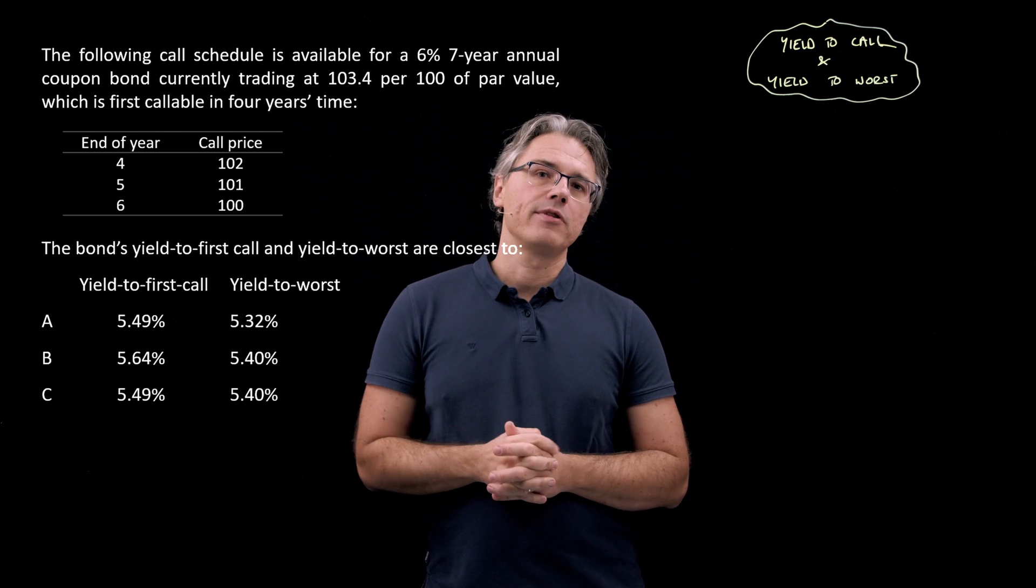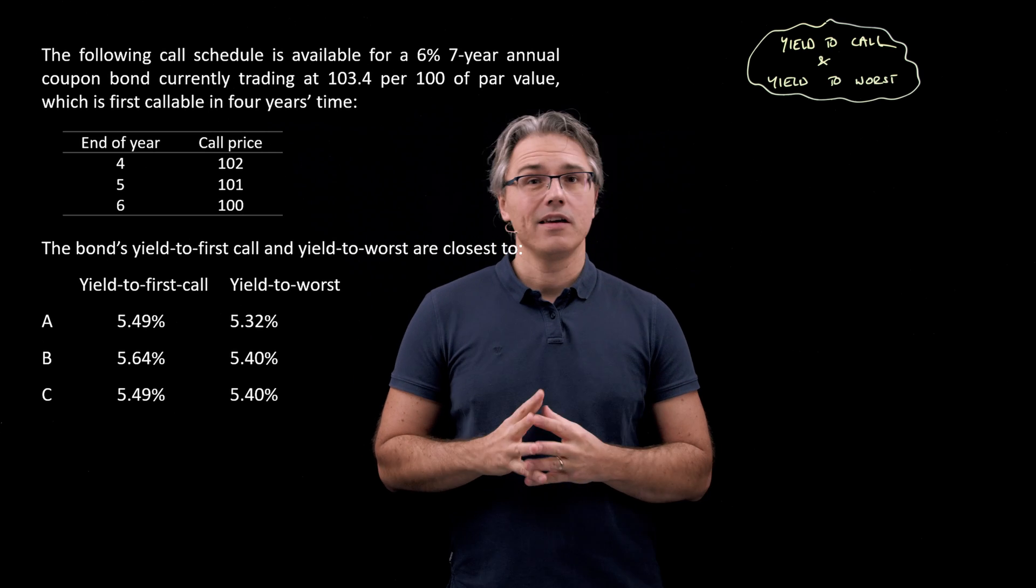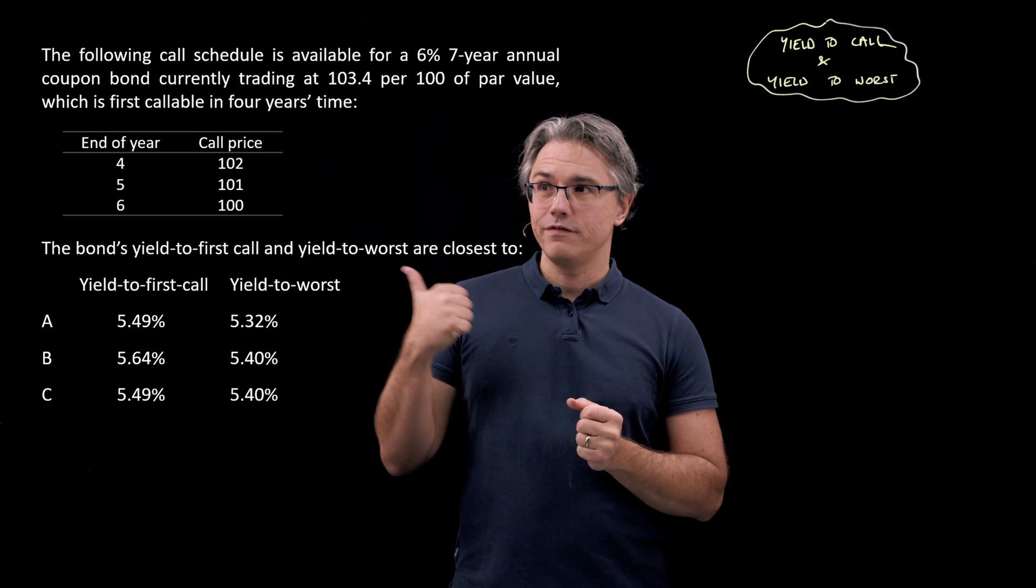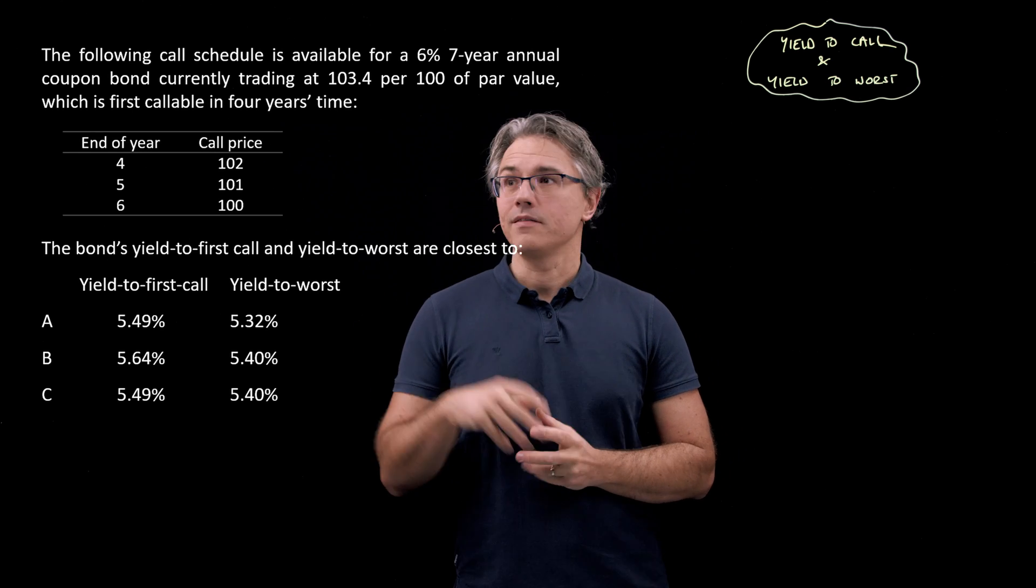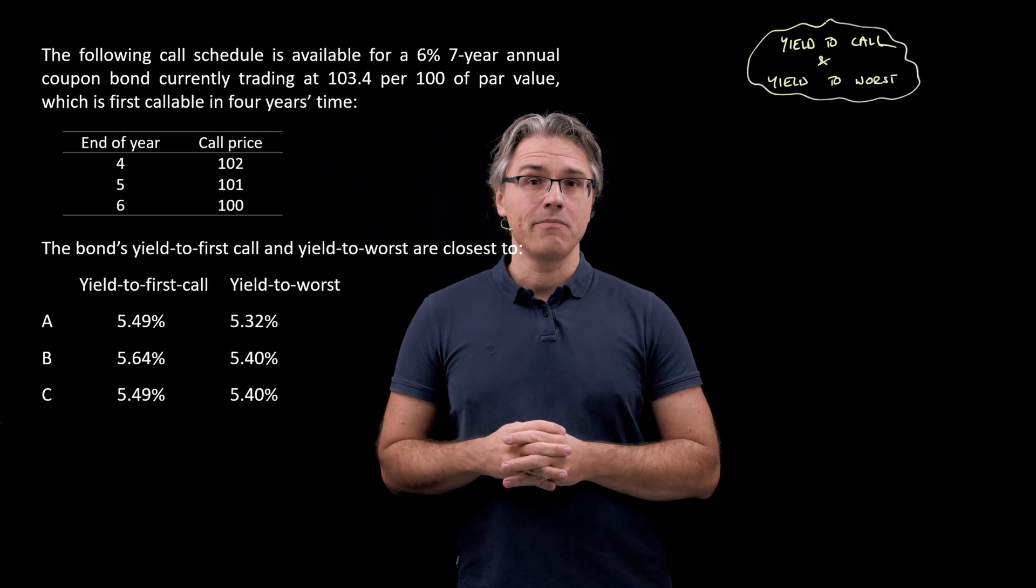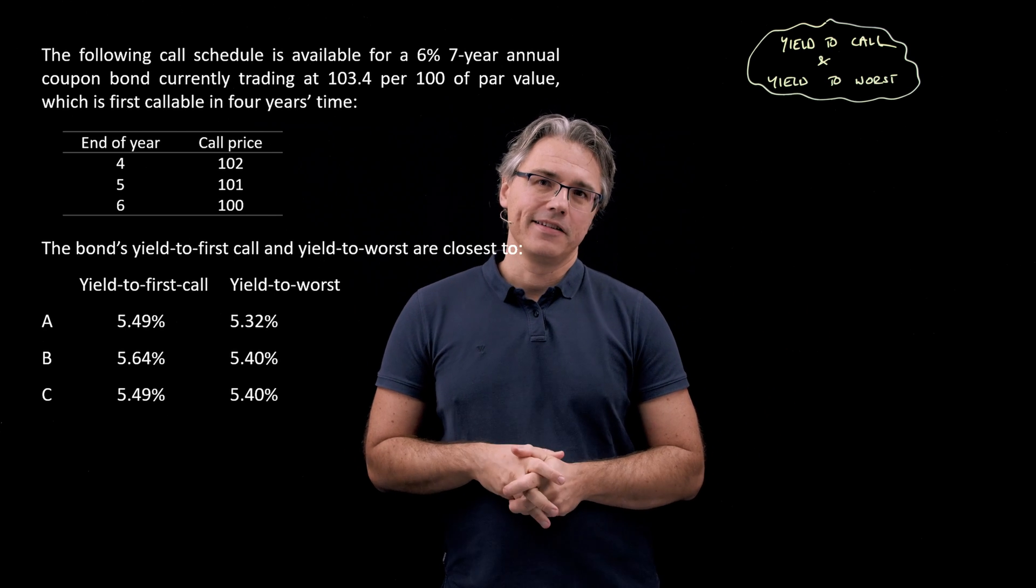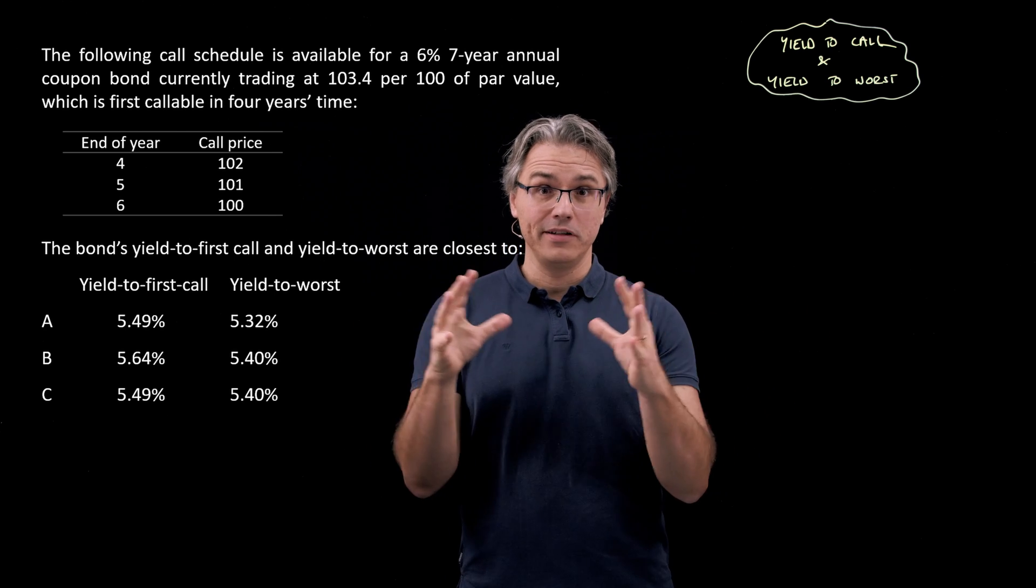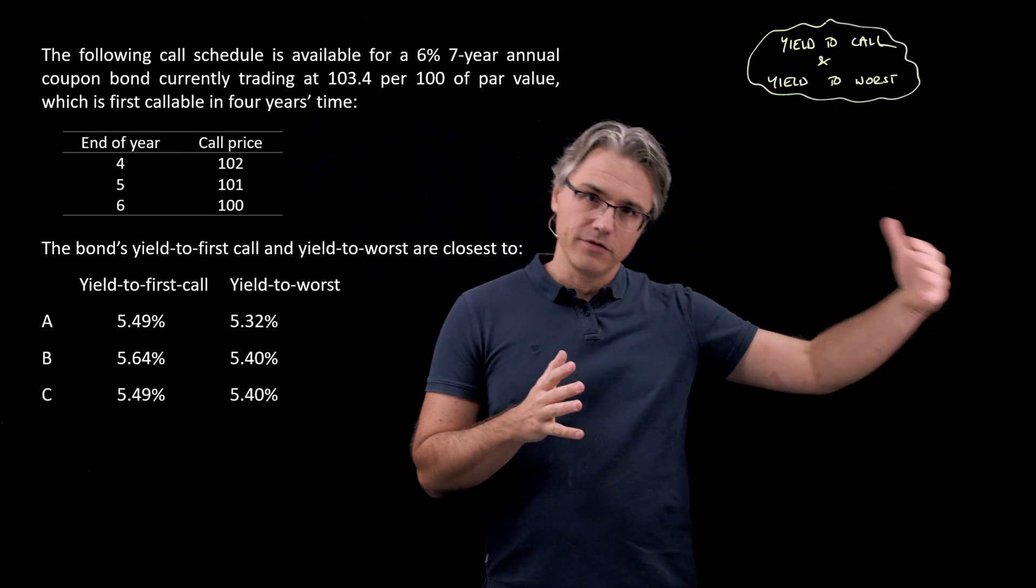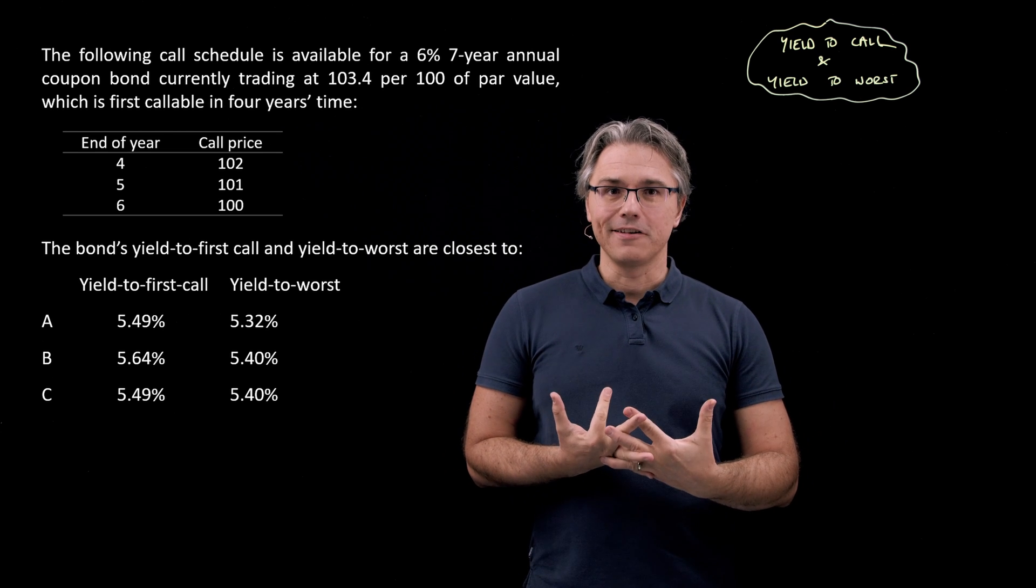The way we proceed in these questions is by computing or performing the classic yield to maturity computations on our calculators, but given a new set of FV, future value data coming from the call price, and new N parameters for the number of years remaining or the tenor of the bond. This will be adjusted depending on what we assume: that the bond gets called at the end of the fourth, fifth or sixth year. So let's proceed with the calculator.